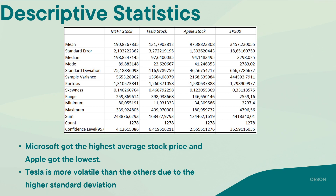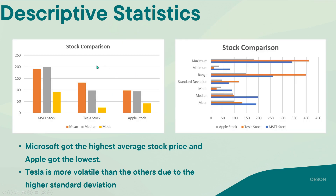Let's first look at the descriptive statistics table provided here. By looking at this, we can see that Microsoft currently has the highest stock price and Apple has the lowest. Tesla is more volatile than the others due to its very high standard deviation. You can also look at this plot to know the mean, median, and mode of each of these companies.